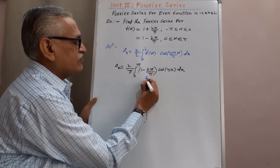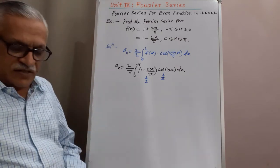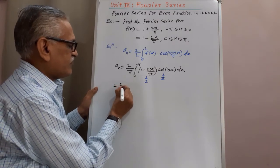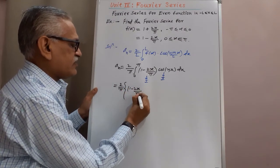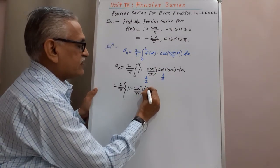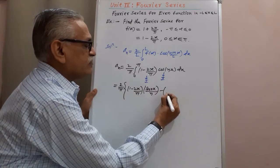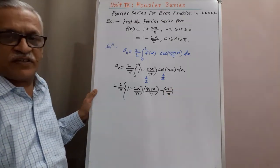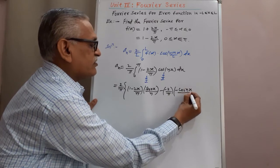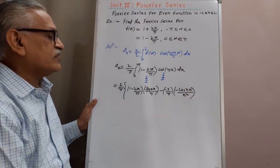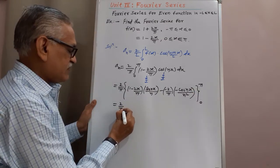The first term (1 − 2x/π) is algebraic, so we consider it as the first term, and cos(nx) as the trigonometric second term. Performing integration by parts: (2/π) × [(1 − 2x/π) × sin(nx)/n − (−2/π) × (−cos(nx)/n²)] with limits from 0 to π. The derivative of the second application is 0, so we stop there.